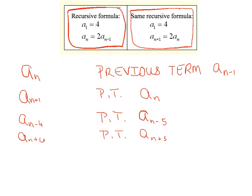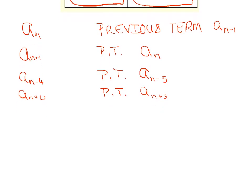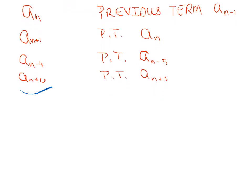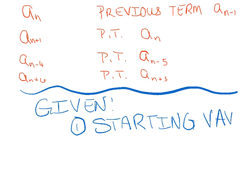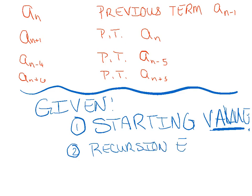They're always going to give you two things. Number one is going to be the starting value — typically it's going to be a sub 1, but it's not always guaranteed to be a sub 1. And then number two, they're going to give you what's called the recursion equation or the recursion formula. Either word is fine. So those are the two things that will be given to you every time.